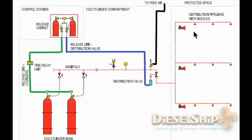In order to flood CO2 inside the engine room, the master mustering should be done first — a headcount order from the master. Then, with all confirmations with respect to your company policy, the master will give orders to the chief engineer to release the CO2. It is the chief engineer who has to release the CO2 into the engine room. Let's see what components are inside the valve control station.